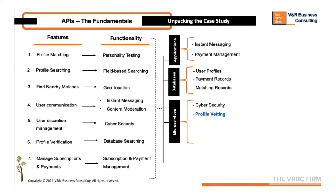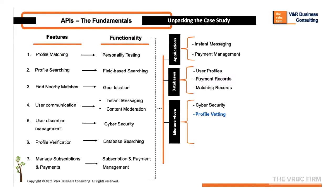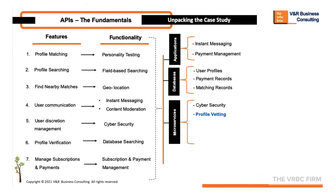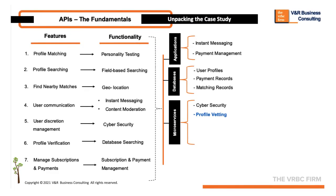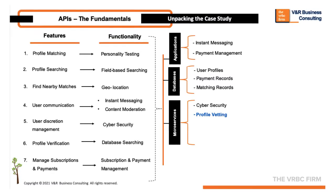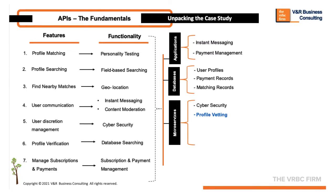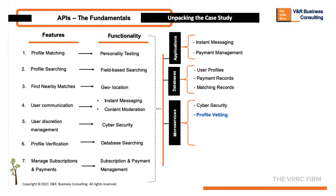We also have a service that vets user profiles by perhaps polling public databases for information such as marital status, criminal record status, and credit record status. The beauty about APIs is that the pieces of software being communicated with only have to expose the data required by the other pieces of software, which adds a much-needed layer of security. The consent of the user will be required, of course. This will help dissuade potential users from being dishonest about why they are really on the platform.